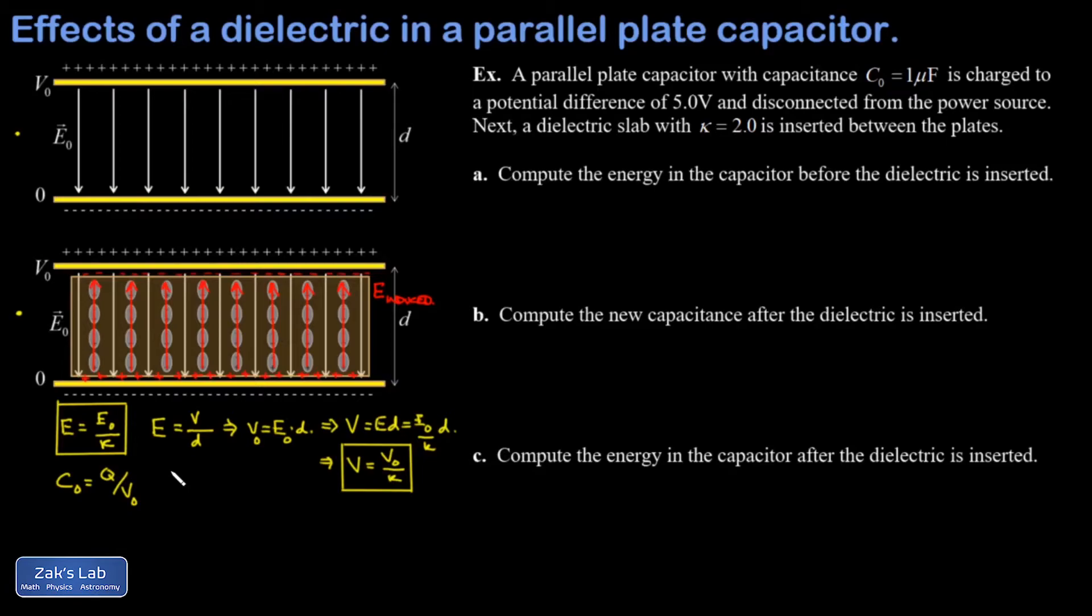I've disconnected the capacitor from the power source, so there's no way I can have any more charge transfers. Q is fixed. So how about our new capacitance? That's Q over our new potential difference, but our new potential difference was V naught over kappa.